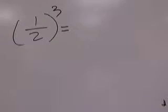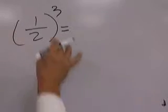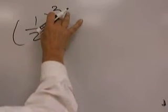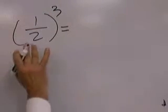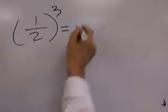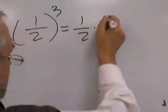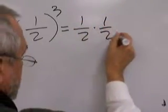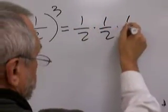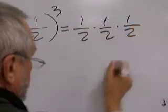It's the cube of one-half. The cube means multiply by itself three times. So you should write it like this while you're learning.